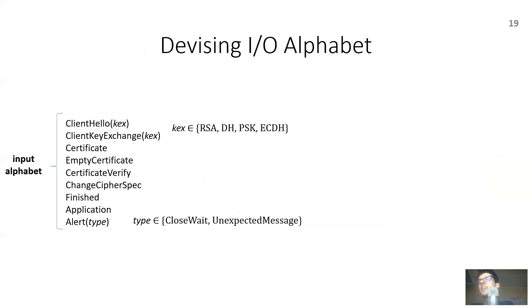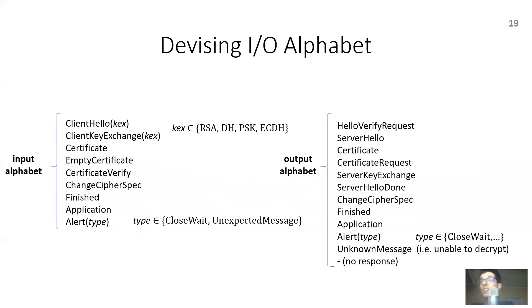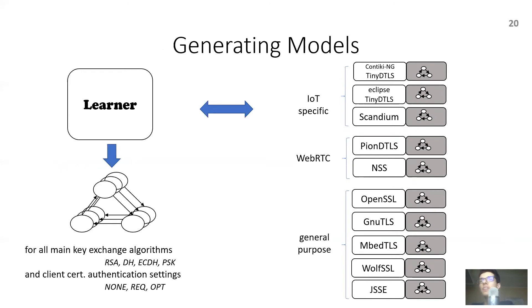The next step in state fuzzing is designing the inputs and outputs used in learning, which make up the input-output alphabets. As we are testing DTLS servers, the input alphabet contains inputs for each message type the client can send to the server, including client hello and client key exchange inputs for several key exchange algorithms, as well as inputs for two common alert messages. Alerts signal exceptional events such as receipt of an unexpected message. The output alphabet includes outputs for all message types a server may generate, notably the no-response output, which signals that the server generated no messages in response. We applied our framework to various DTLS implementations, ranging from general-purpose ones such as OpenSSL to IoT-specific ones such as Scandium.